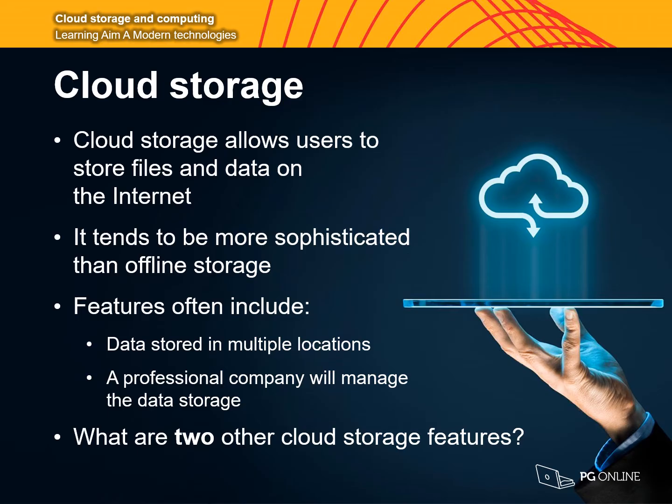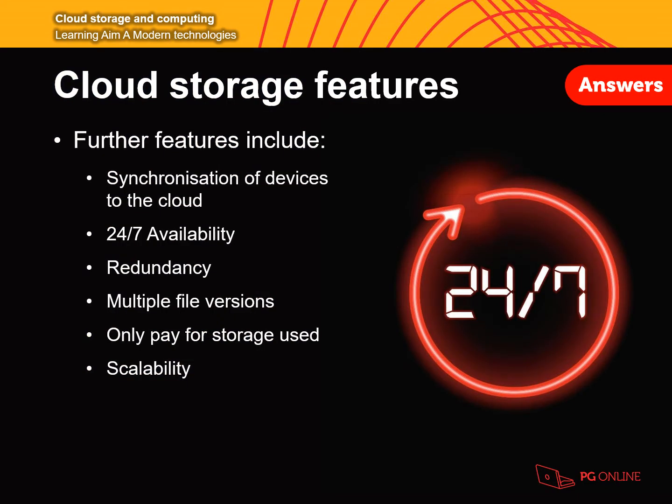The cloud can be split into two major areas: cloud storage and cloud computing. Cloud storage allows users to store files and data on the internet. It tends to be more sophisticated than offline storage. Offline storage means saving the file directly to your device, for example saving on your phone or your laptop. Features often include data being stored in multiple locations. A professional company will manage the data storage. This third party stores the data on their servers, which can be beneficial but can lead to drawbacks such as security issues, which we'll look at later.